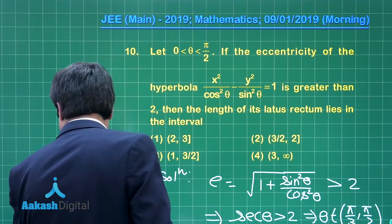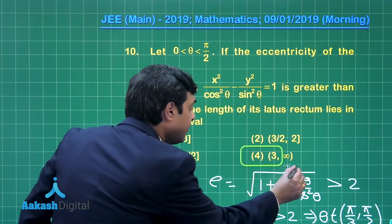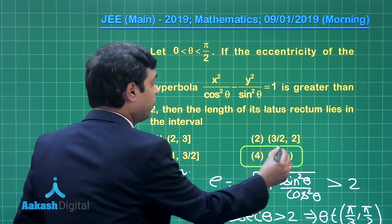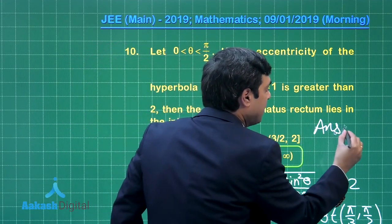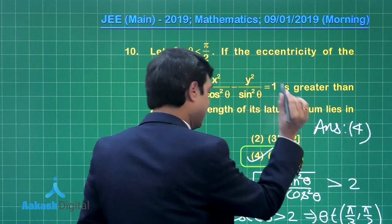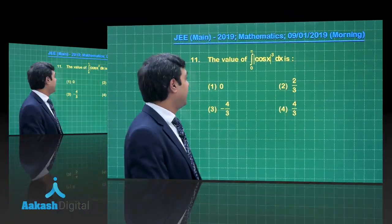We are simply getting it is lying in the interval 3 to infinity. Do we have such an option? Yes, we can see it is available here as option number 4. So let us mark and mention correct answer. I'm sure this is clear.